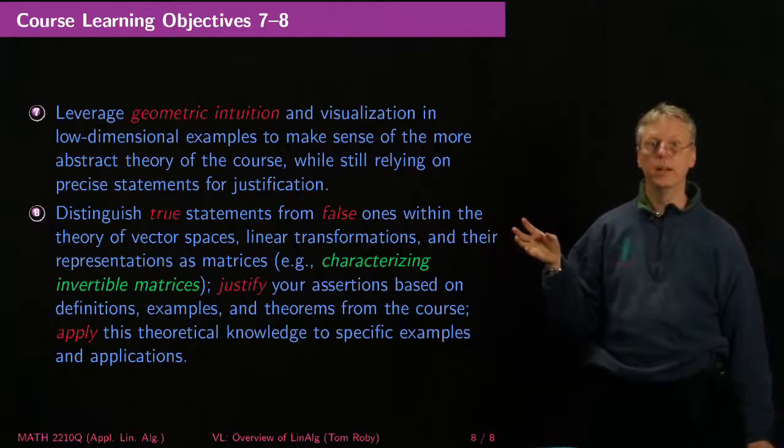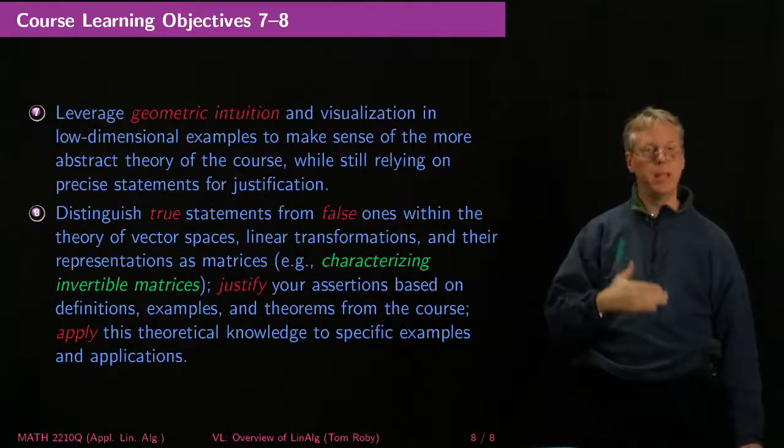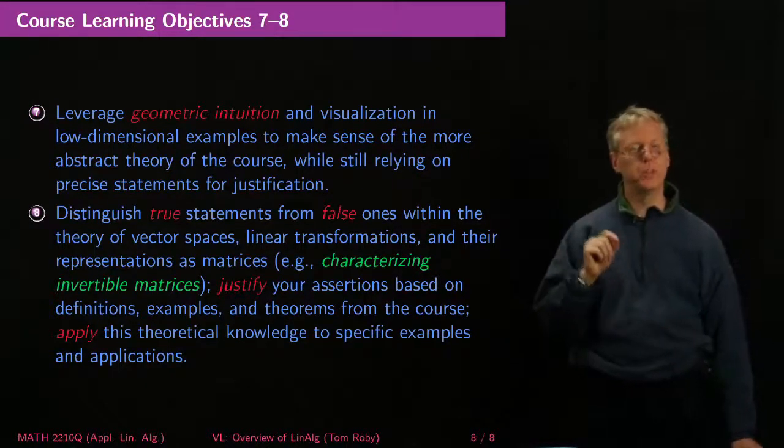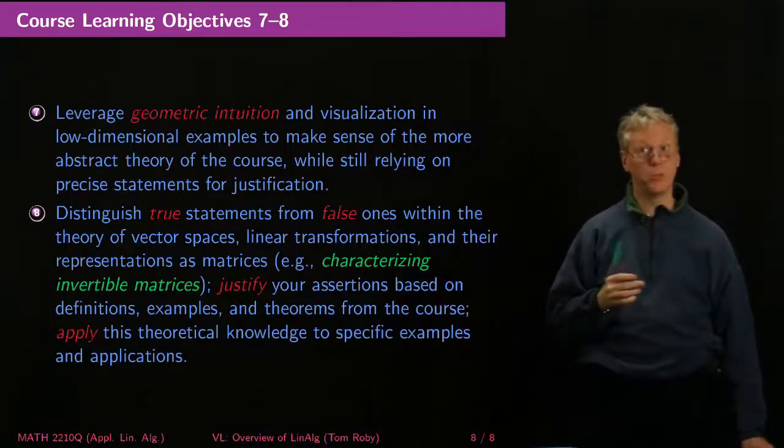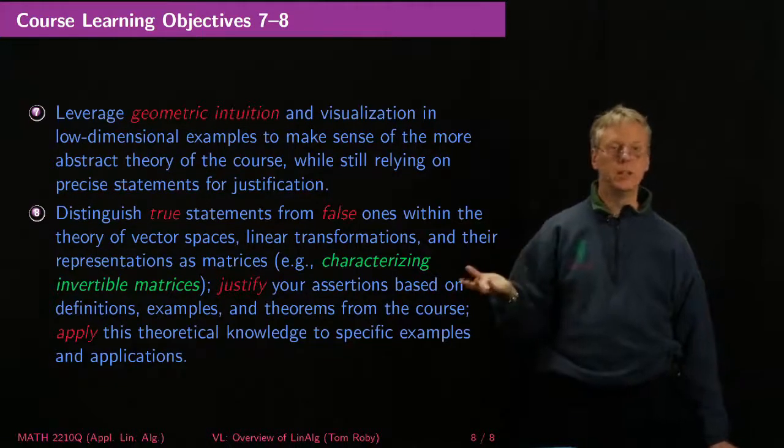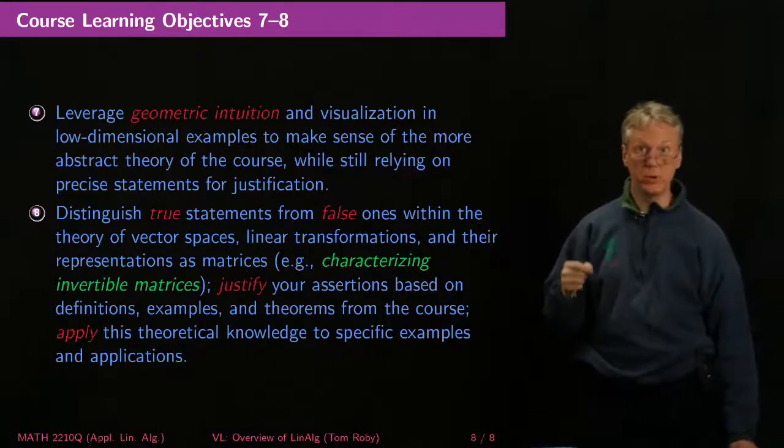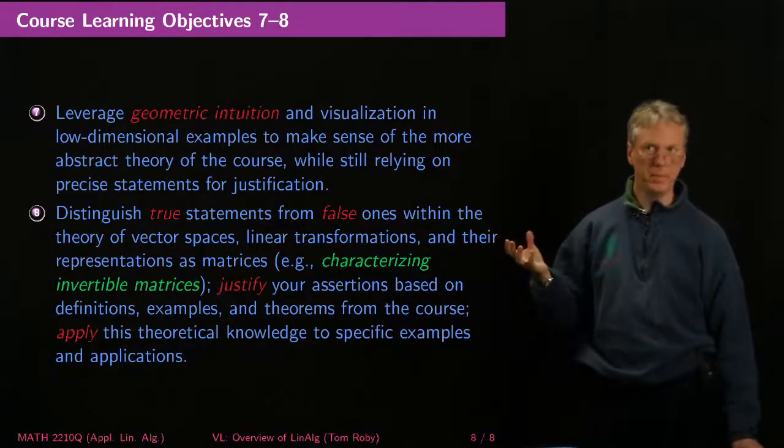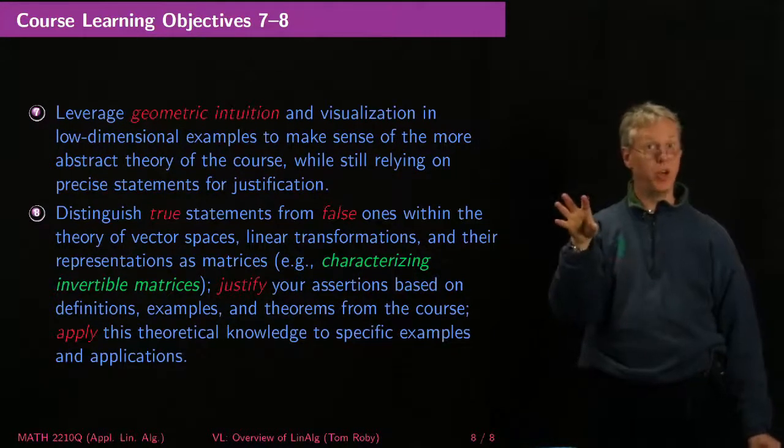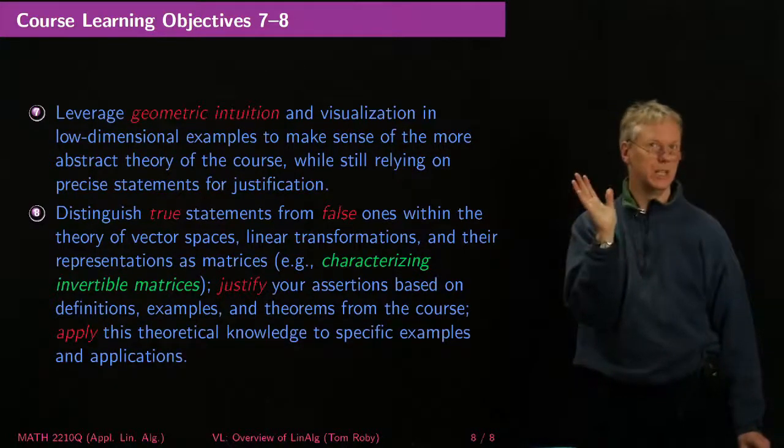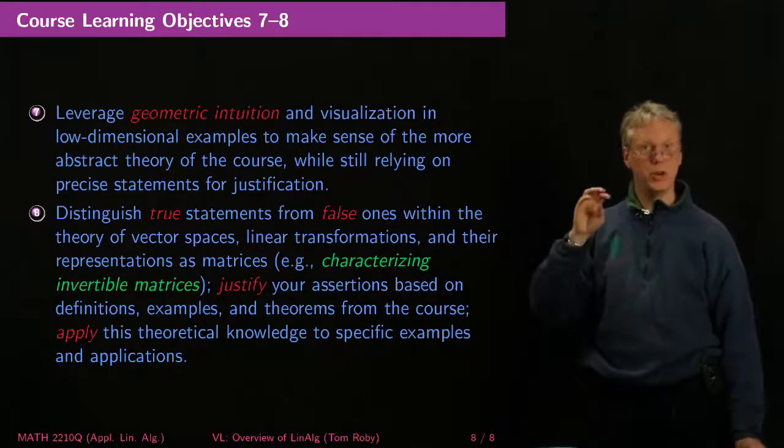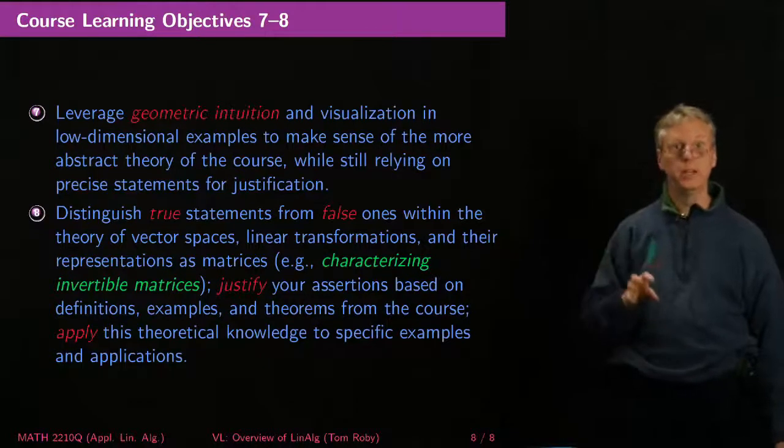And now here's the thing that maybe, for some of you, may involve more work than you were expecting, which is getting better at distinguishing true statements from false ones within the theory of vector spaces, linear transformations, and the representations of matrices. There will be lots of true and false questions. Some of them I'll ask you in class just in a way to see how your learning is going. Some of them will be asked on summative assessments like quizzes or exams. Learning how to give a counter example to a statement that's false, an example that shows that some statement is false. It's usually the cleanest way to do it. And learning how to give a simple, you know, a few lines of argumentation that show how you get from point A to point B to show that something is actually true.